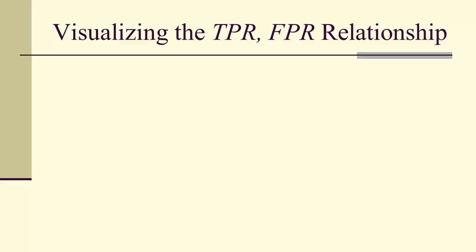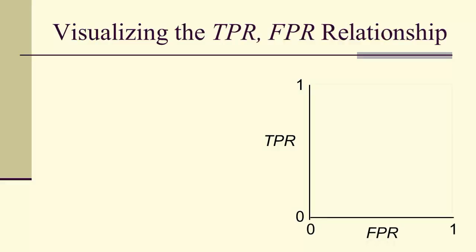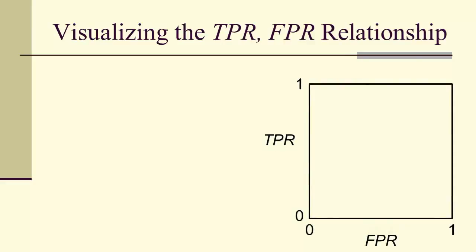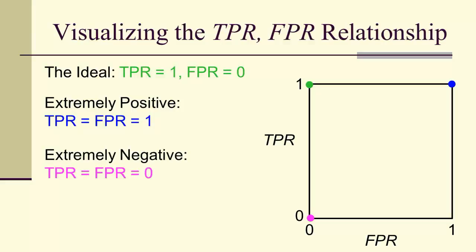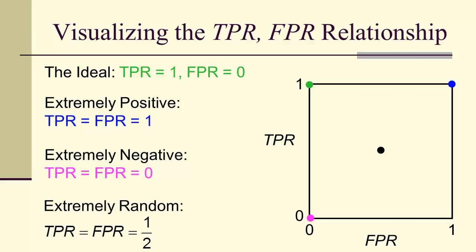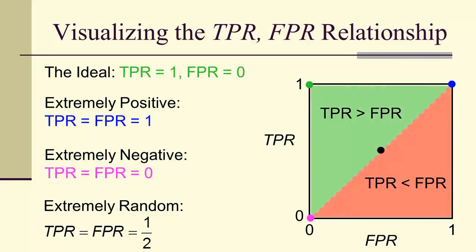Let's visualize the TPR-FPR relationship by putting the true positive rate on the vertical axis and the false positive rate on the horizontal axis. The ideal is for the true positive rate to be 1 and the false positive rate to be 0 — the green point at (0, 1). If extremely positive, both rates are 1; if extremely negative, both are 0; if random, both are one half. The upper half of the unit square is where the true positive rate is greater than the false positive rate.